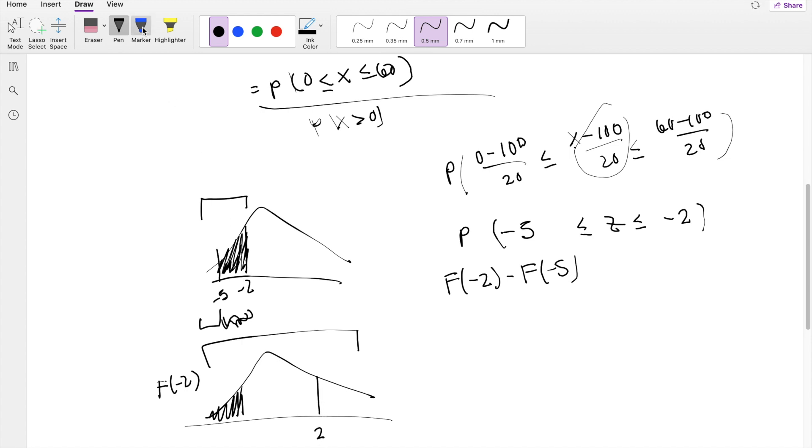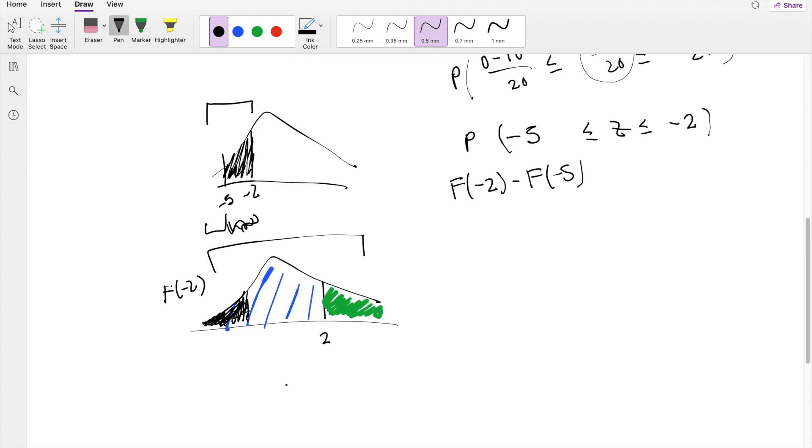If I do 1 minus the positive 2 here, so taking this blue area away, you get left over with this green area right here, which is exactly the same area, which is exactly the same probability as our black part right here. So we can also say F of negative 2 is equal to 1 minus the F of 2.